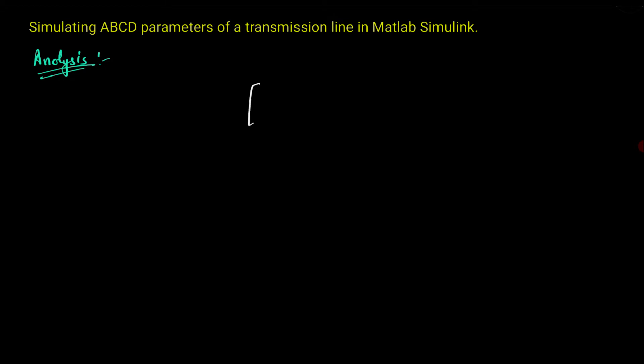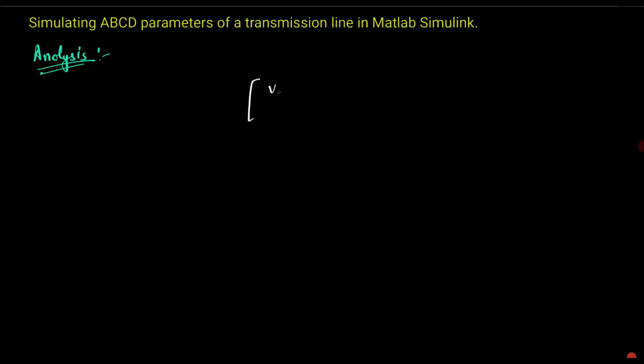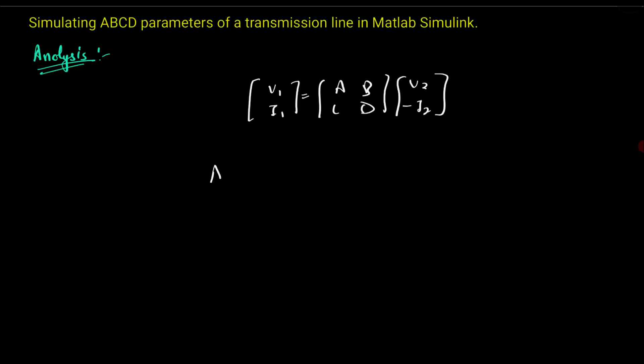Simulating ABCD parameters of a transmission line in MATLAB Simulink. The ABCD parameters are represented in matrix form — this is the left-hand side, the ABCD parameter matrix, and the right-hand side.